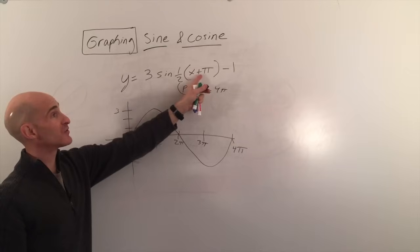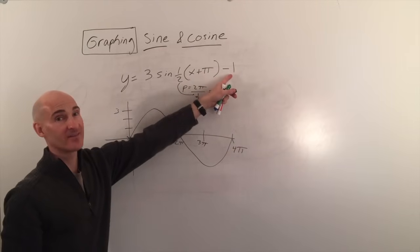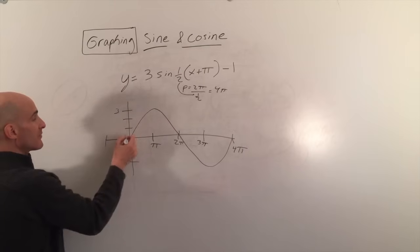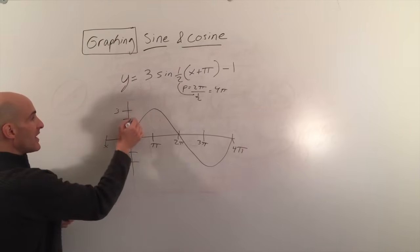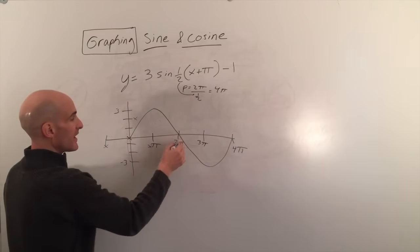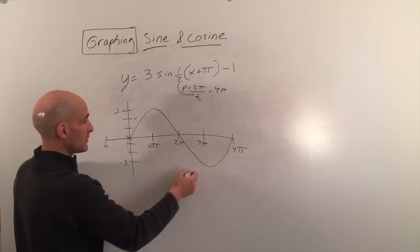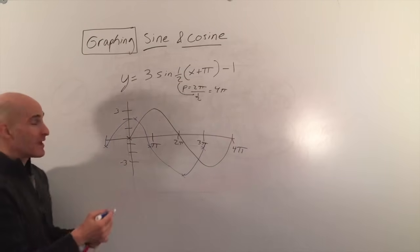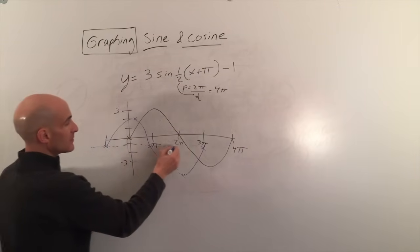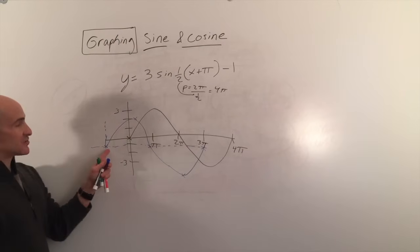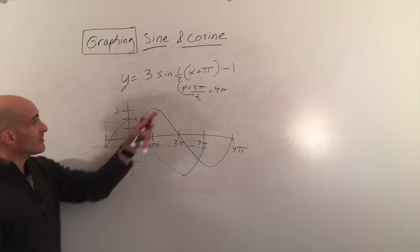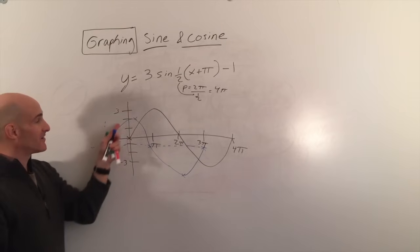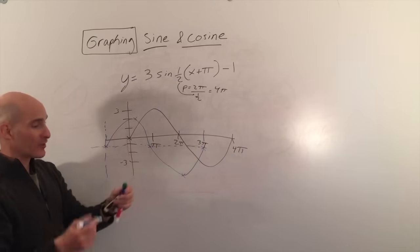Now we're going to shift the graph left π and down 1. Remember, the plus sign has the opposite effect, so it shifts left. Every point moves left π and down 1. Connecting these shifted points gives us our final graph. You can draw a dotted line to mark your new starting point — instead of the origin, it's shifted left π and down 1. Think of that as your new origin and just graph from there: 0, max, 0, min, back to 0. That's the sine example.